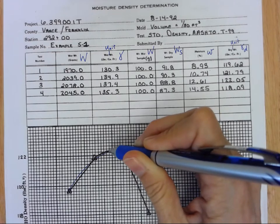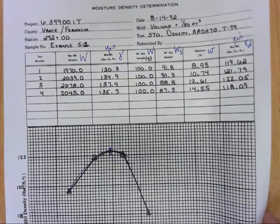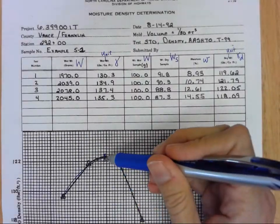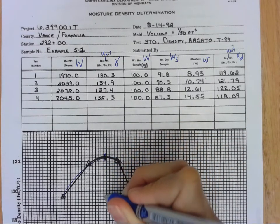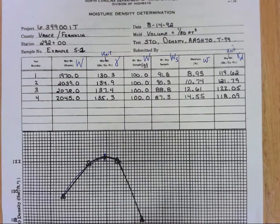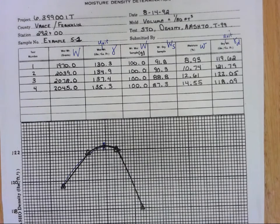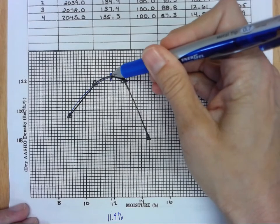As we're looking at this data we want to pick out what is our optimum moisture content and what's our maximum dry density and we'll just do that by looking at our curve and seeing where our curve gets to its highest point, you know around here. And so as you do that you just kind of look straight down from here to figure out your optimum moisture content. So let's say that's, you know, it's maybe a little bit less than that 12 percent, so we could call that 11.9 percent.